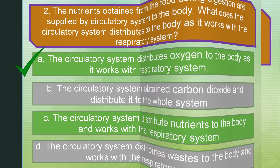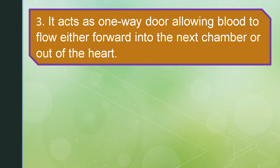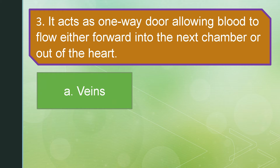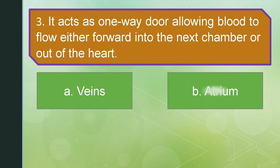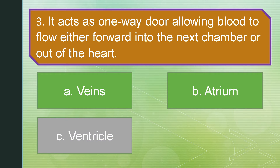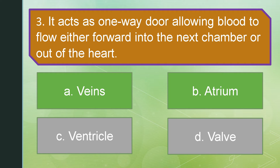Question number three. It acts as a one-way door allowing blood to flow either forward into the next chamber or out of the heart. Letter A: Veins. Letter B: Atrium. Letter C: Ventricle. Or letter D: Valve. The answer is letter D: Valve.